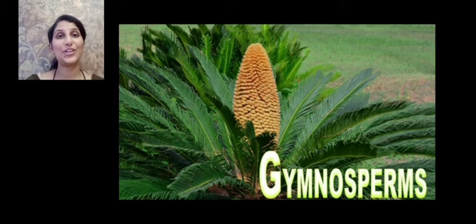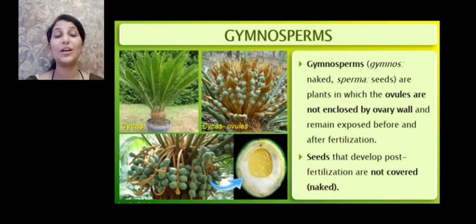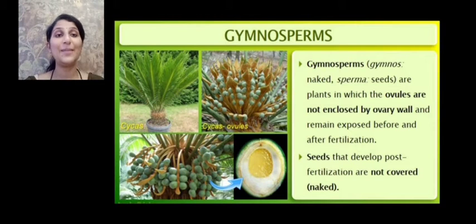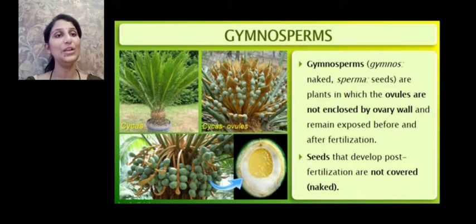Welcome to the next session of the chapter Plant Kingdom. In this module we are going to learn about the fourth division, namely gymnosperms. The word gymnosperms comes from the combination of two words: gymnos meaning naked and sperma meaning seeds. They are plants in which the ovules are not enclosed by an ovary wall and remain exposed before and after fertilization.